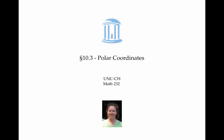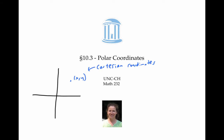This video introduces the idea of polar coordinates. Polar coordinates give an alternative way of describing the location of points on the plane. Instead of describing a point in terms of its x and y coordinates — those are the Cartesian coordinates — when using polar coordinates, we instead describe the point in terms of a radius r and an angle theta. R is the distance of the point from the origin, and theta is the angle that the radius line makes with the positive x axis.